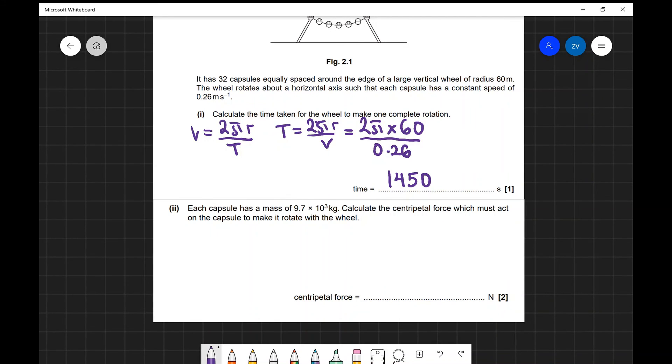Next one. Each capsule has a mass of 9.7 times 10 to the power of 3 kg. Calculate the centripetal force which must act on it. Well the formula for centripetal force is m v squared over r. So F is m v squared over r. We pretty much have everything that we need to directly input into this equation. So the mass is 9.7 times 10 to the power of 3. We're not going to forget to square the v. This is actually one of the most typical exam errors, just to forget a square in a relatively simple calculation. So 9.7 times 10 to the power of 3 multiplied by 0.26 squared, really important.